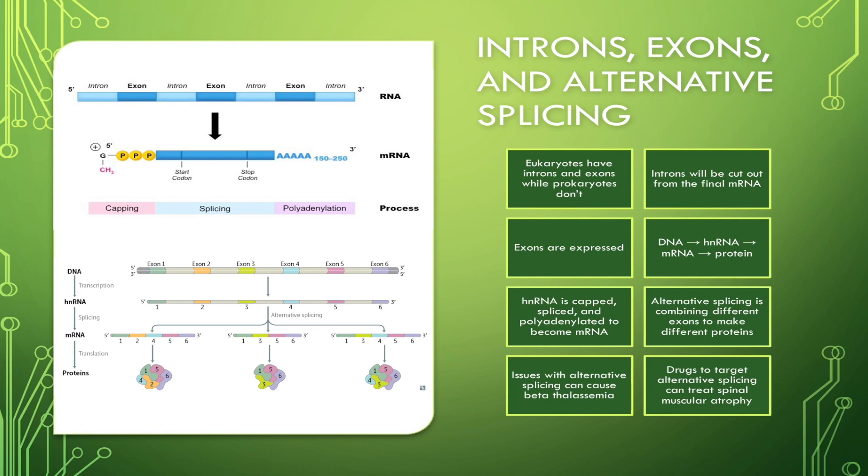Now, with that background information, let's take a look at this image over here. You can see that DNA is first turned into heterogeneous nuclear RNA, also called hnRNA. So hnRNA is essentially like an immature mRNA. After hnRNA is capped, spliced, and polyadenylated, it's called mRNA.